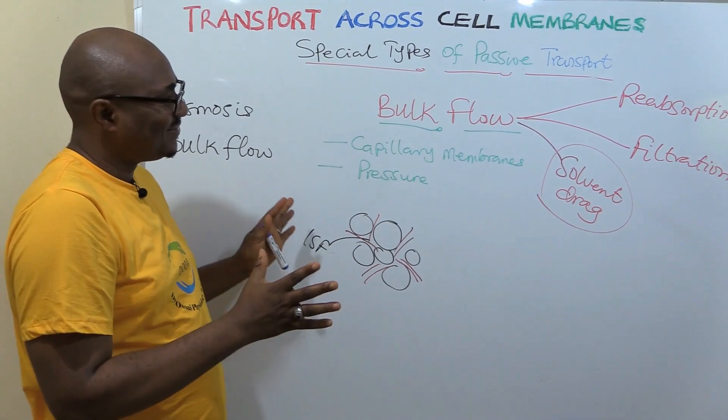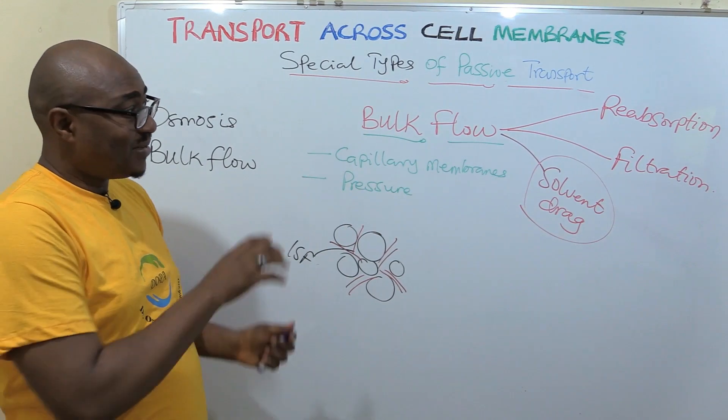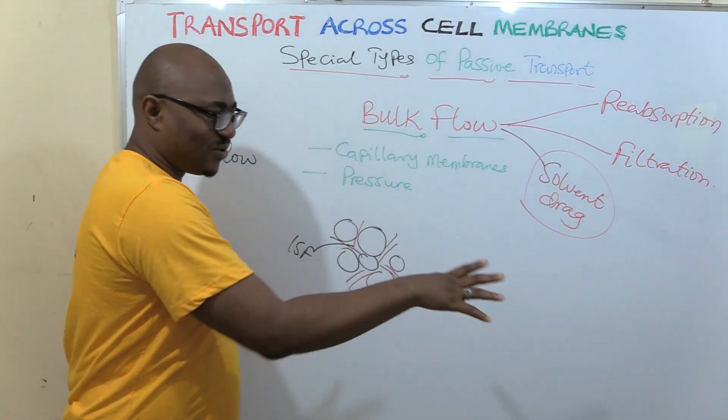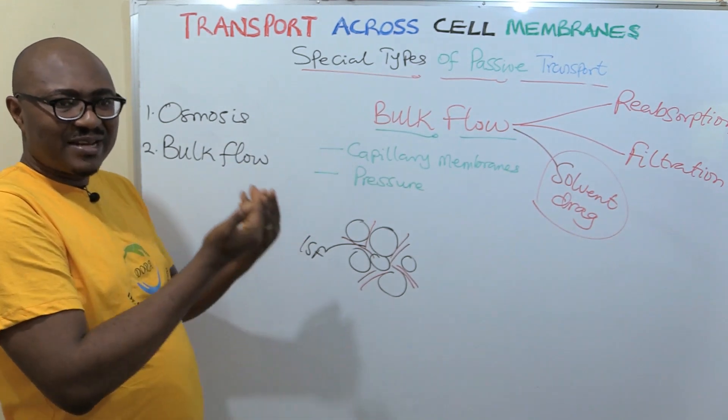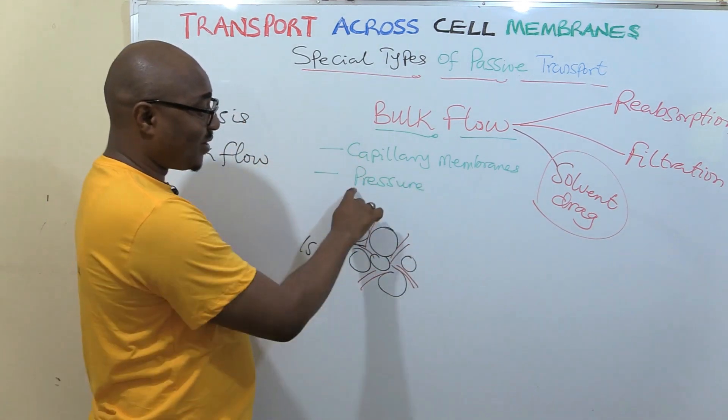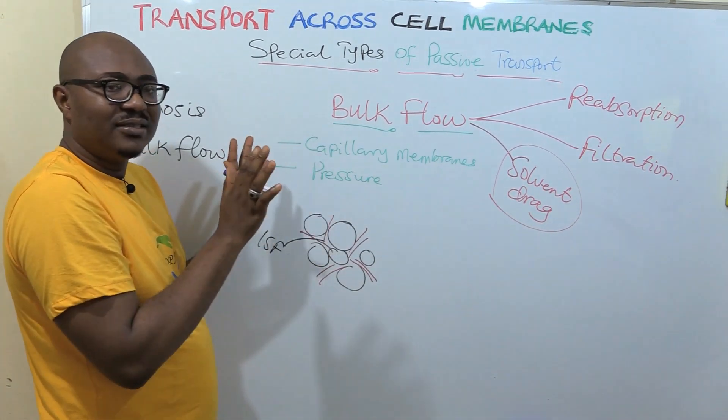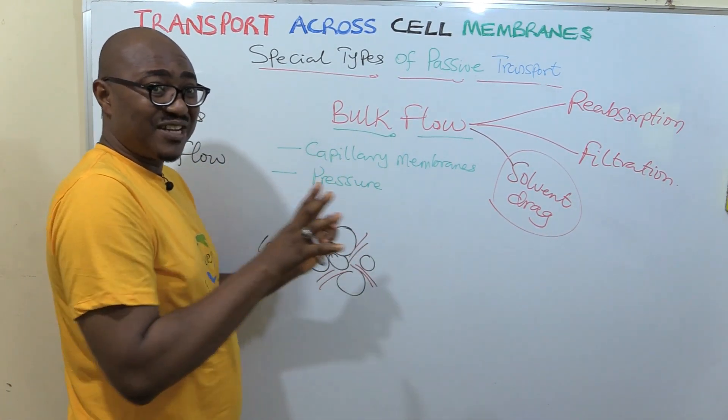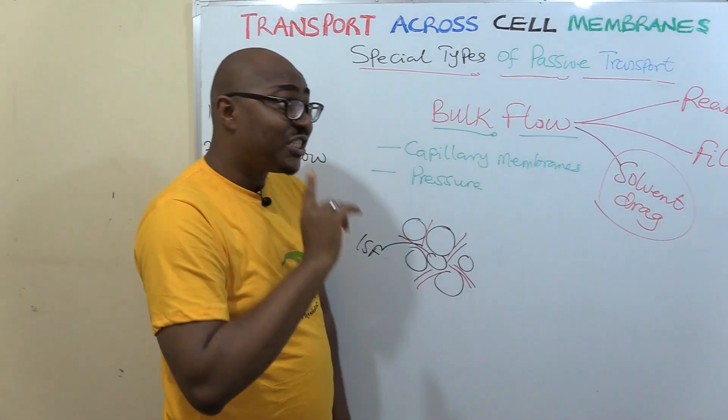That's bulk flow for you. So, the kidney is one special place where a lot of bulk flow happens. Even the digestive system also. There's a lot of water, fluid, reabsorption, filtration, but more in the kidney, you'll have a lot of filtration from the capillaries out into the tissue fluid. And when it's coming from tissue into the capillaries, it's called reabsorption. Two ways. By pressure. The pressure of water. The pressure is what is pushing it. Don't ever forget it. Once you miss this pressure, you have missed it. And it occurs only in capillary membranes. Not normal cell membranes. That is what you need to know about these special types, osmosis and bulk flow.